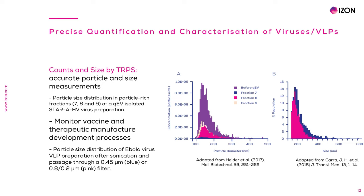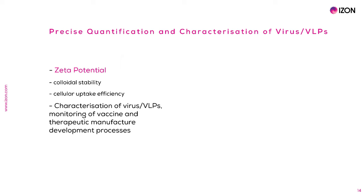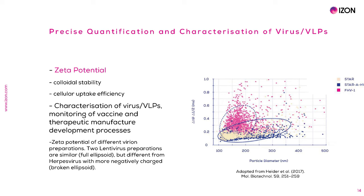TRPS has been used to obtain precise measurements of particle size distribution for formulation stability studies. In this context, TRPS can be used as a tool to assess viral stability over time and under different conditions — in one particular example, it was used in a study of Ebola virus VLPs intended for vaccines. Many biological interactions between nanoparticles, or between the nanoparticle and recipient cell, depend on the particle's charge, or zeta potential. Zeta potential affects the tendency of virus and VLP preparations to aggregate or remain in suspension, and can influence cellular uptake efficiency and cytotoxicity to recipient host cells. Determining zeta potential can therefore be used to guide approaches to formulation optimisation. In one example, different virion preparations were characterised by zeta potential: the two lentivirus preparations clustered together, represented by blue and cream-coloured data points, while pink data points representing a herpesvirus preparation showed it to be more negatively charged.